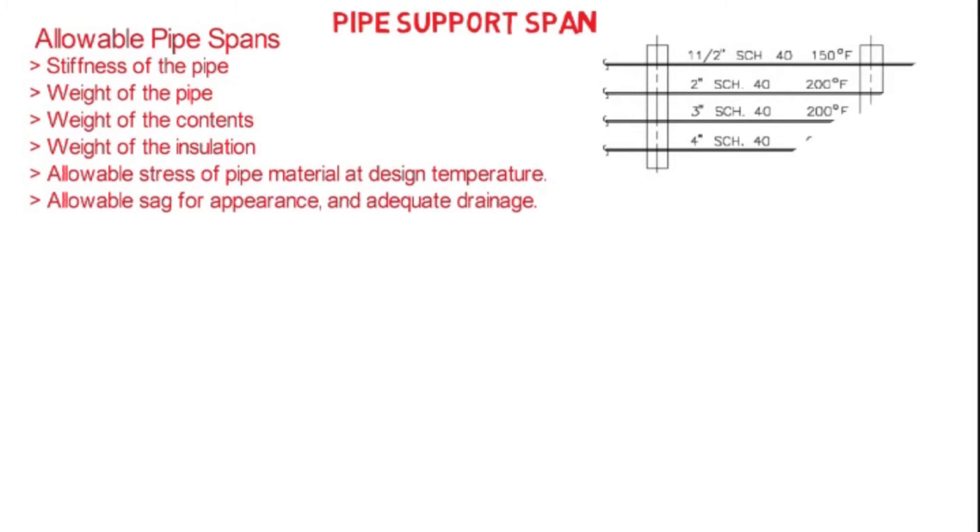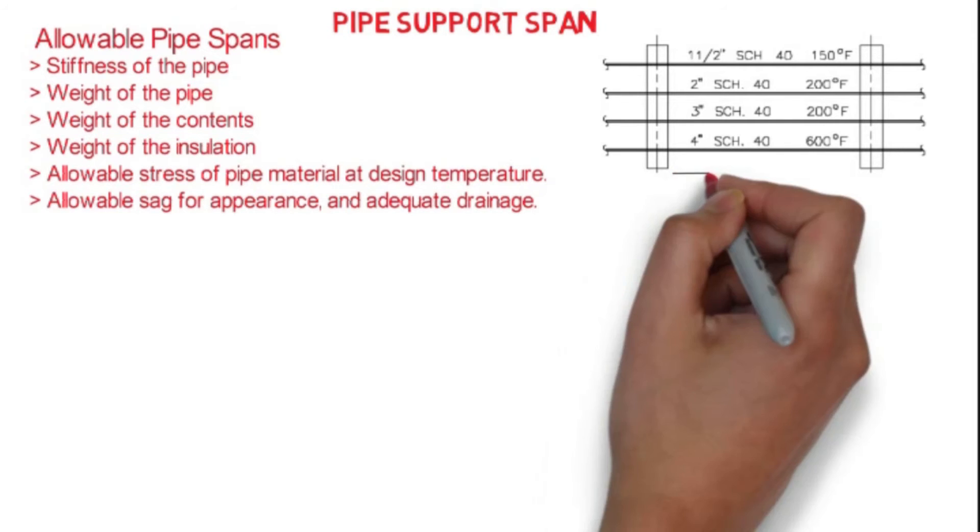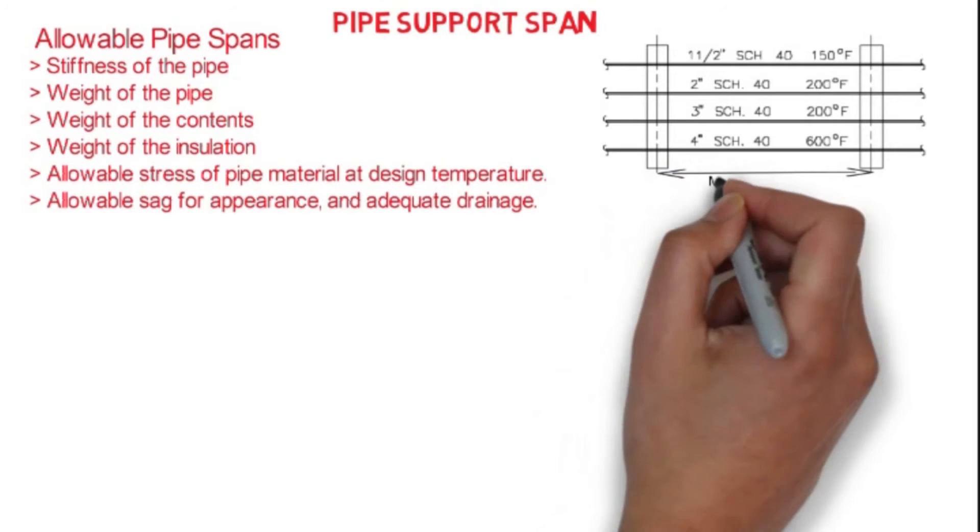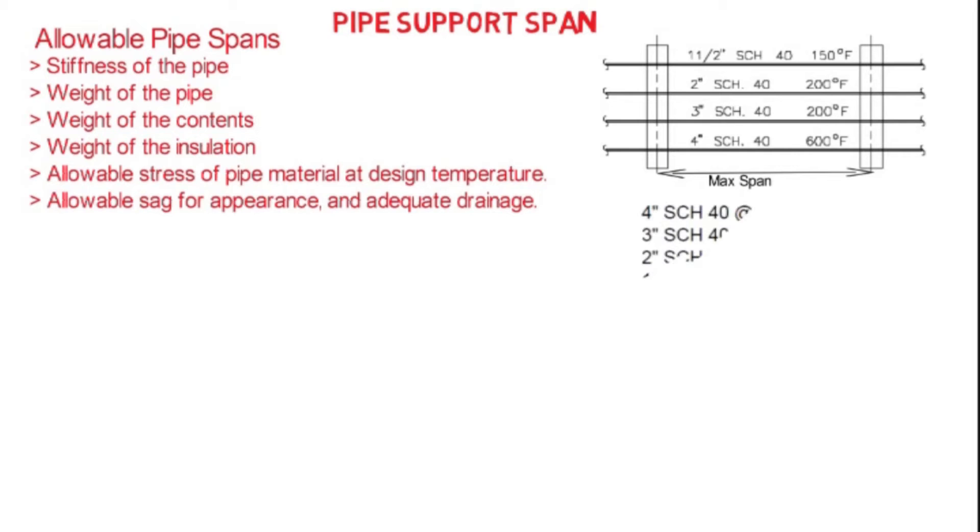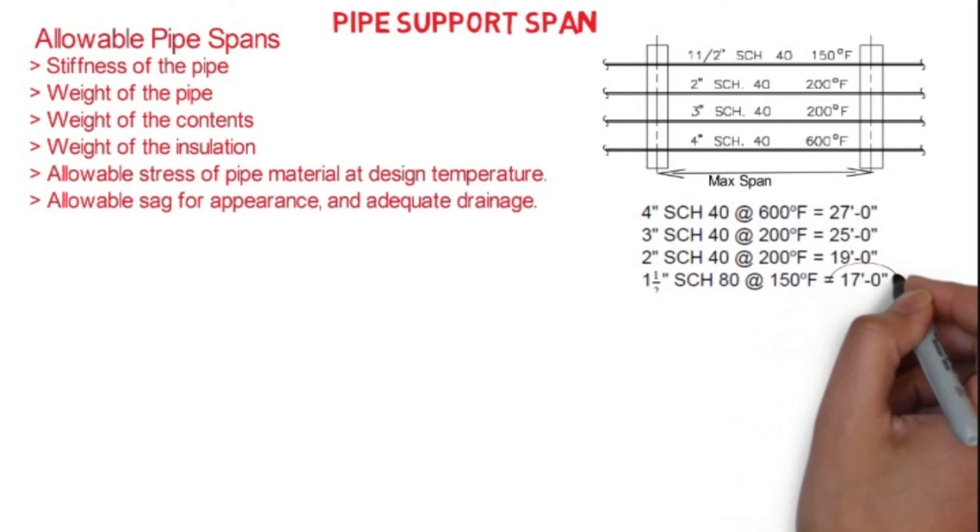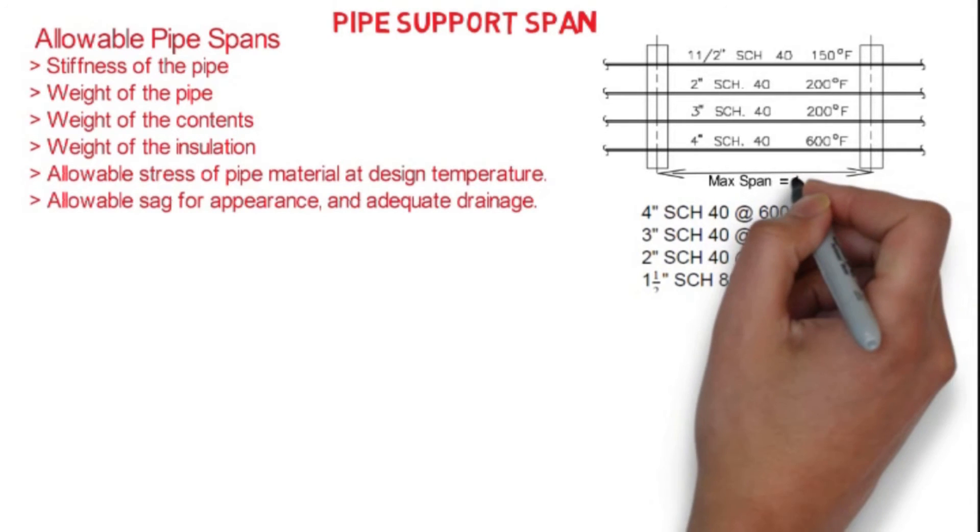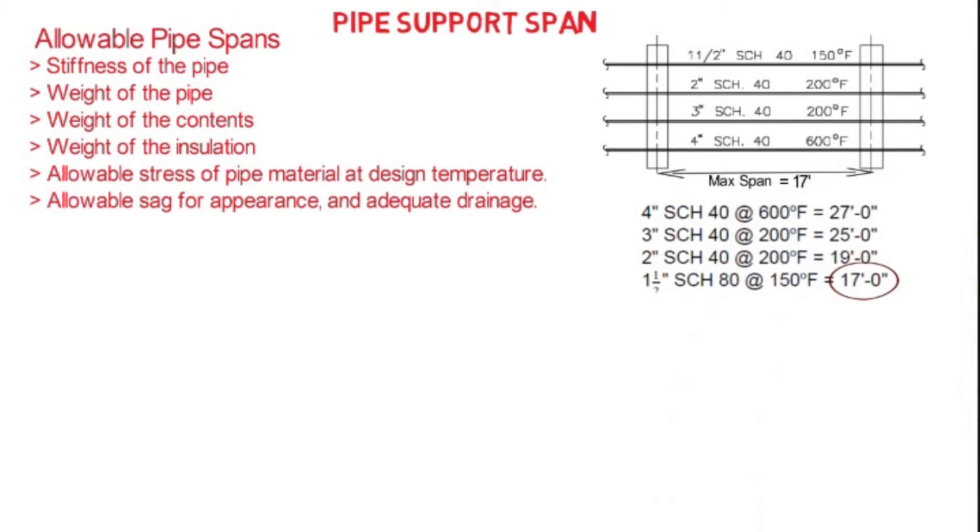As you can see in the image, we have four lines running parallel to each other having different sizes: one half inch, two inch, three inch, and four inch. So we have to consider what is the maximum supporting span required. We will see the chart and get to know that for four inch it's required 27 feet, for three inch 25 feet, for two inch 19 feet, and for one half inch 17 feet. So we will consider the lowest, that is 17 feet, for the maximum supporting span for this particular configuration.